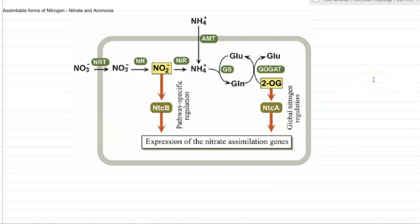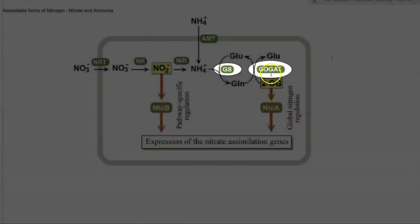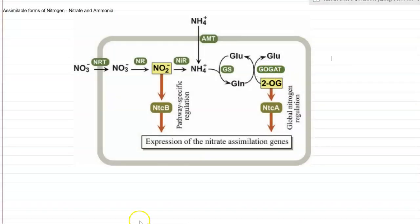If you look at this diagram, you can understand how nitrate as well as ammonia are getting assimilated into the living system, by using certain enzymes such as glutamine synthetase and glutamine oxoglutarate aminotransferase. The details of nitrogen assimilation we will see later.